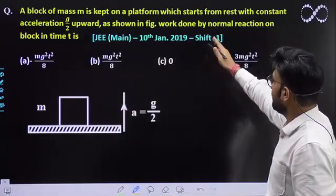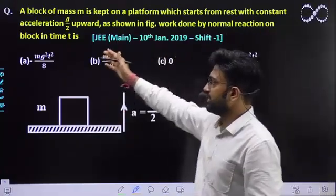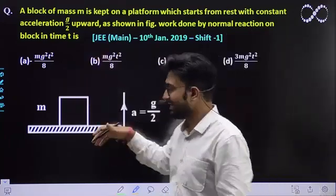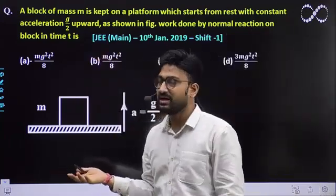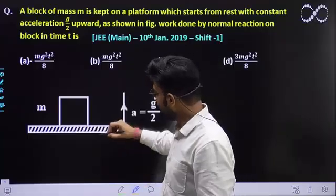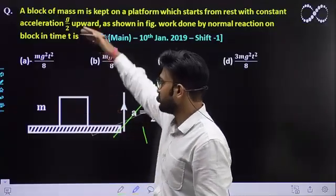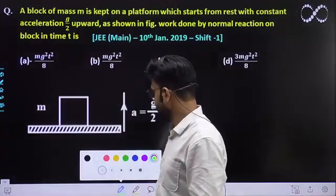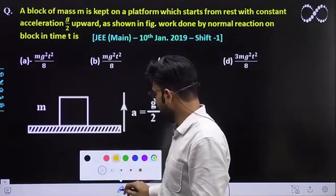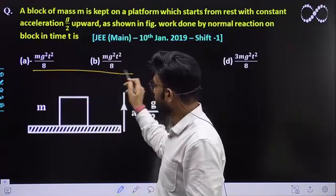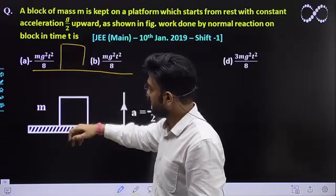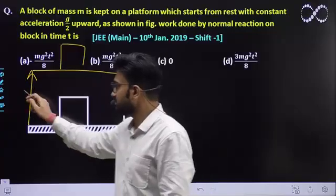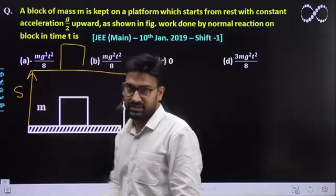As shown in the figure, work done by the normal reaction on a block in time t is - kitna work done hoga normal reaction force ka t time mein. T time mein pehli baat to ye poora platform kuch upar chala jayega. In t time this whole platform will move upward.